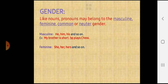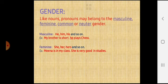Feminine. Now feminine gender includes the words she, her, hers and so on. For example, Meena is in my class. She is very good in studies. Here she is used in place of the noun word Meena and Meena is a feminine gender. So she is also a feminine gender.